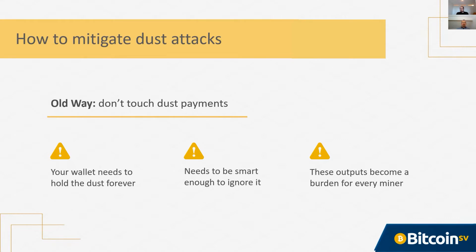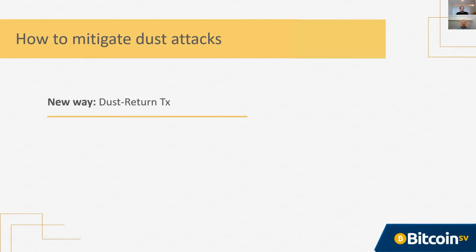We've come up with a new way to address this problem — a special type of transaction called a dust return transaction. It effectively becomes a donation to the miner. It basically allows you to send the dust out of your wallet to a miner. It has a couple of net benefits: the dust gets cleaned up and is out of your wallet and the miner's database, and the attacker actually learns nothing because there's no connection between the dust they've sent you and any other input in your wallet.